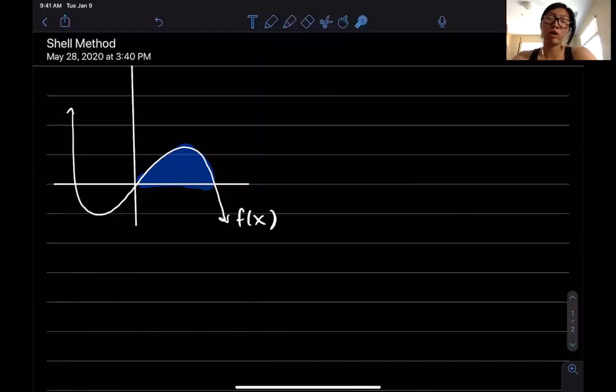Let's say I wanted to find the volume of the shape that you get when you rotate that blue region around the y-axis. So we're gonna come around like this, right?